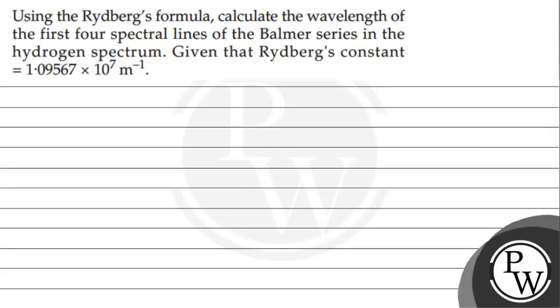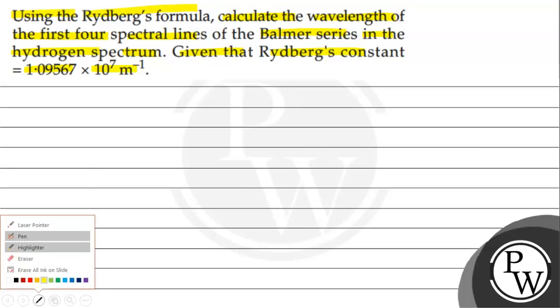The question says that using the Rydberg's formula, calculate the wavelength of the first four spectral lines of the Balmer series in the hydrogen spectrum. Given that Rydberg constant is 1.09567 into 10 to the power 7 meter inverse.